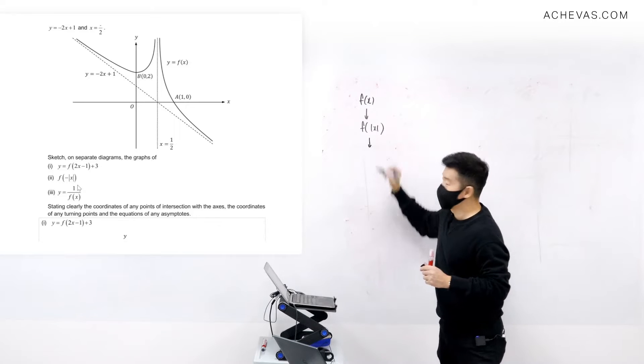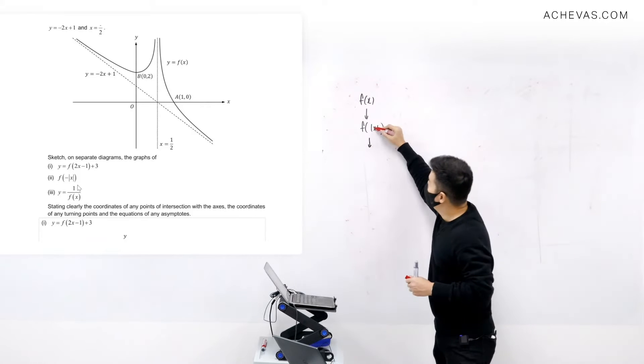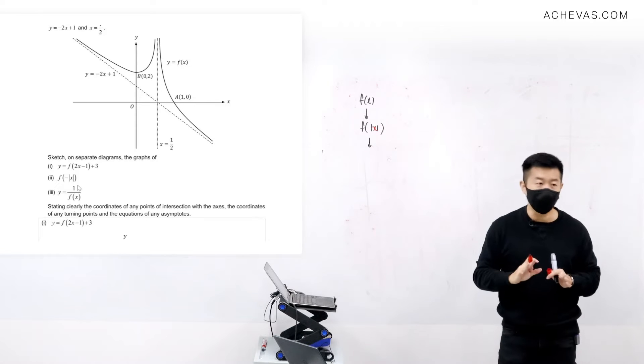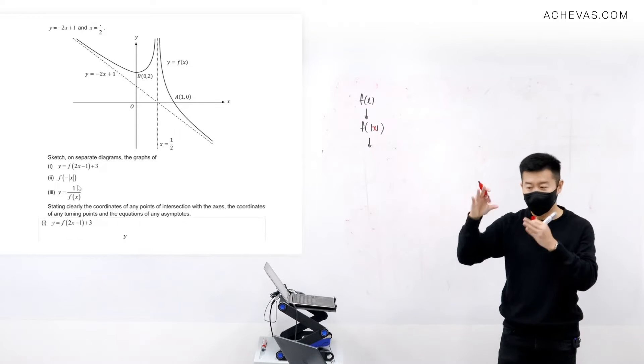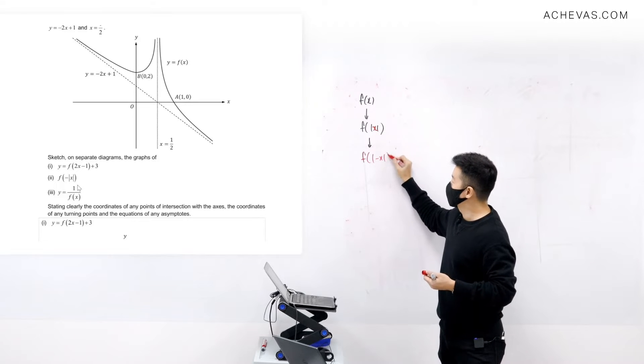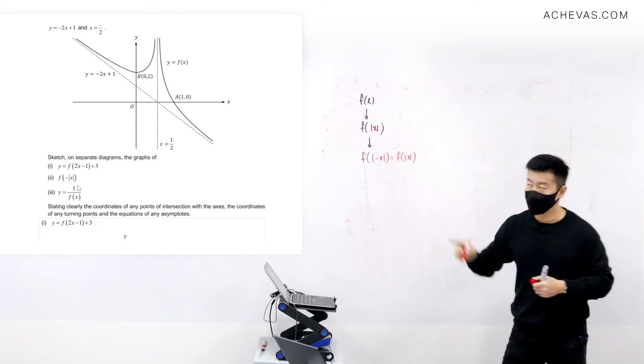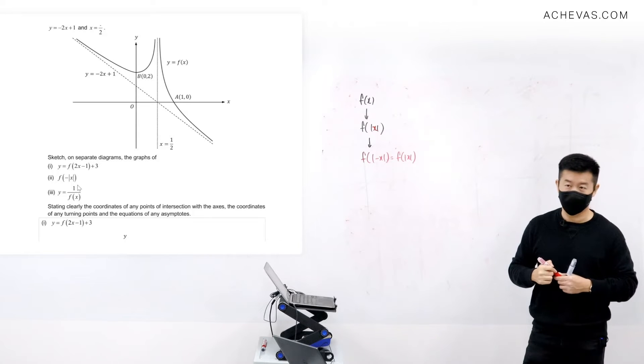then what you need to recognize is that it will not work. Because if you can only replace this x, there is no way for you to get f of negative modulus of x. Because even if you replace this x here by minus x, it is still going to give you this. It will never give you what the question is asking for.